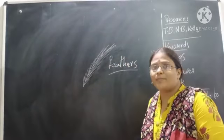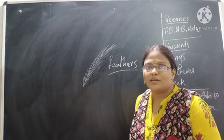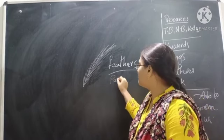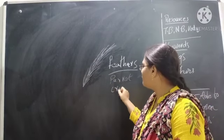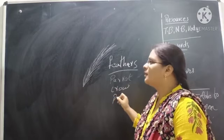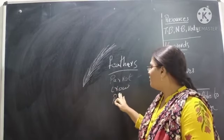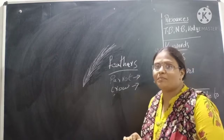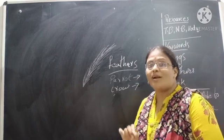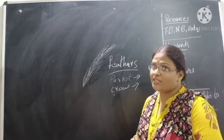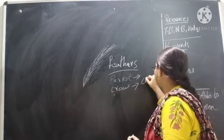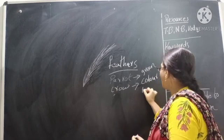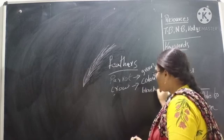Now tell me, do all birds have the same type of feathers? What are the birds we can find in your house? Sometimes we can see parrots, crow, pigeon, sparrow, all of these. Now tell me, are the feathers of parrots and crow the same? No. Then what is the change? They are changing their color. Very good. Parrots are green, crow is black.